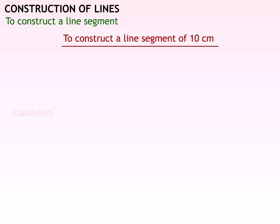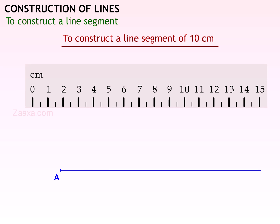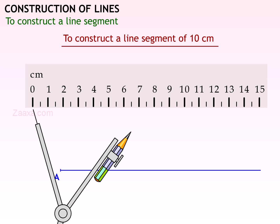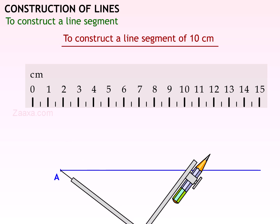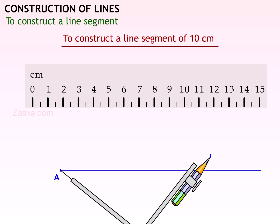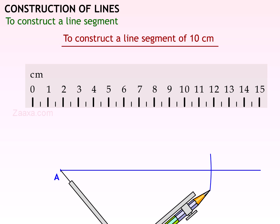The same line can be drawn using a pair of compasses. Draw a straight line and mark a point A on it. Place the metallic tip of the pair of compasses on the zero centimeter point of a ruler. Adjust it so that the pencil point of the compasses is accurately at the 10 centimeter mark. Now without changing this length, place the metallic tip of the compasses on A and cut an arc on the line with the pencil.